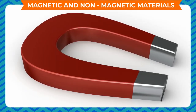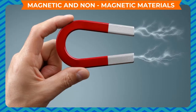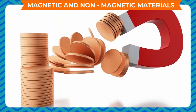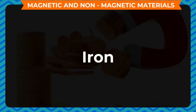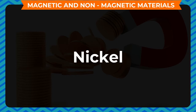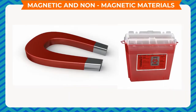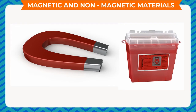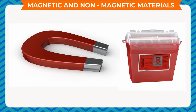Thus, we can say that the materials which are attracted towards a magnet are called magnetic materials. For example, iron, cobalt, nickel, etc. Whereas, the materials which are not attracted by a magnet are called non-magnetic materials.